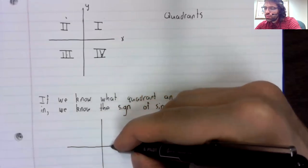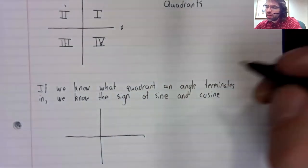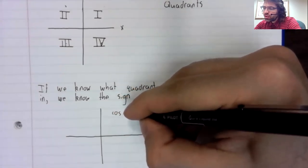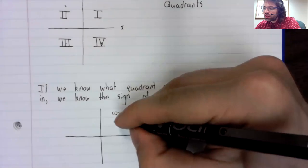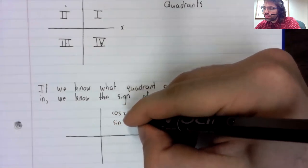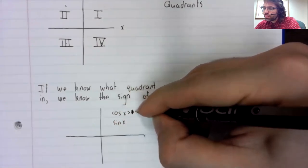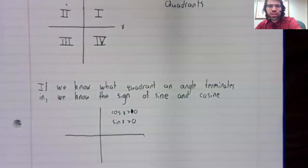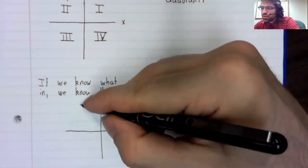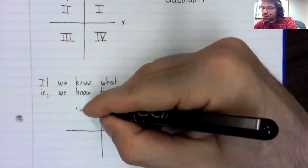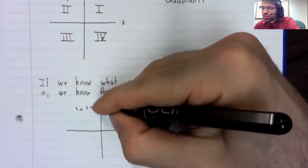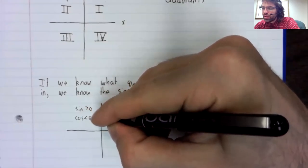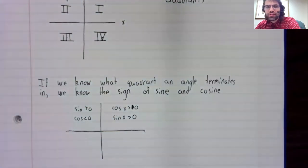So in terms of the sine and the cosine, in the first quadrant they are both positive. In the second quadrant, the sine is positive but the cosine is negative.